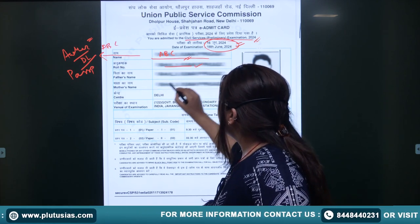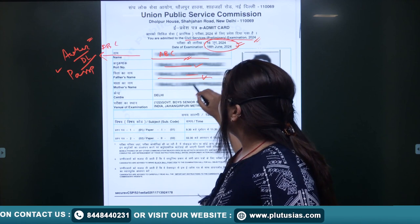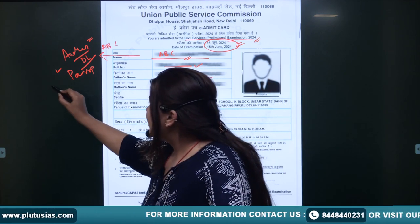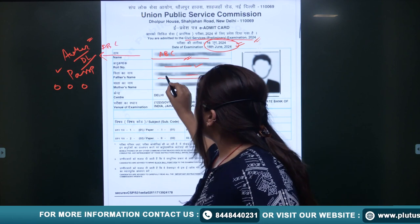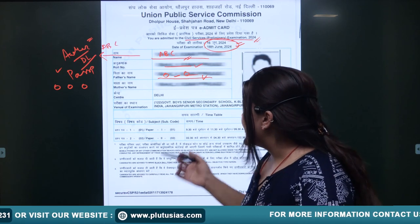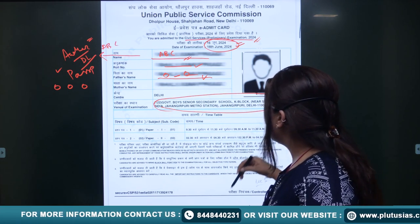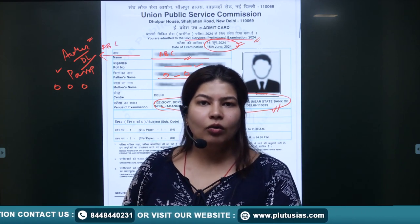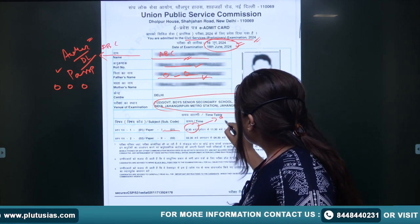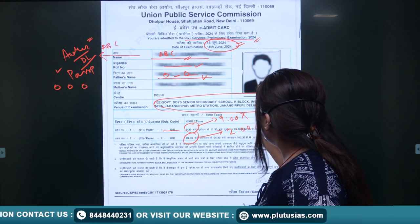Check your roll number carefully. Father's name should match — first name and last name should be consistent, including middle names where applicable. Your center and venue are listed — visit it one day before. Paper 1 is at 9:30 AM — after 9:00 AM, no entry in any case. Paper 2 is at 2:30 PM — after 2:00 PM, there will be no entry in any case.